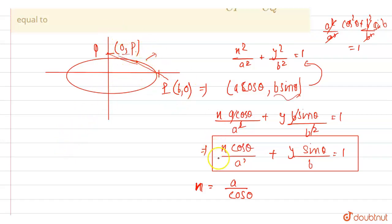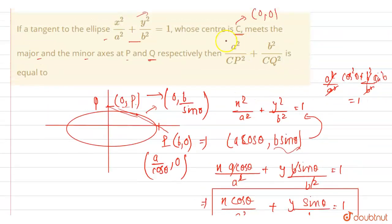So to find this P, we will put this point here. So, by putting X is 0, so this is gone and Y is equals to we got as B by sin theta. So this equation P we have as A cos theta comma 0 and this is 0 comma B sin theta. And note that centre C is given here.